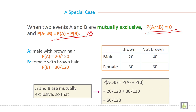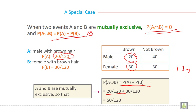Here is one example. Male with brown hair: probability of A is 20 by 120, because male with brown hair is 20 and total is 120. Female with brown hair is 30 by 120. A and B are mutually exclusive, so probability of A union B equals probability of A plus probability of B: 20 by 120 plus 30 by 120. So probability of A union B is 50 by 120 in this example.